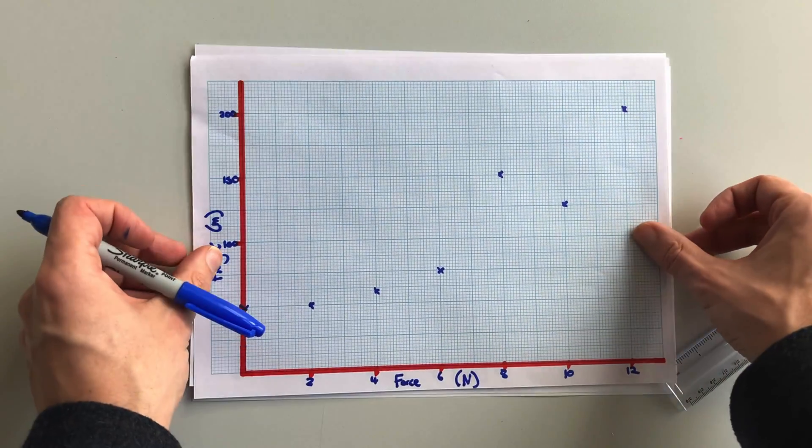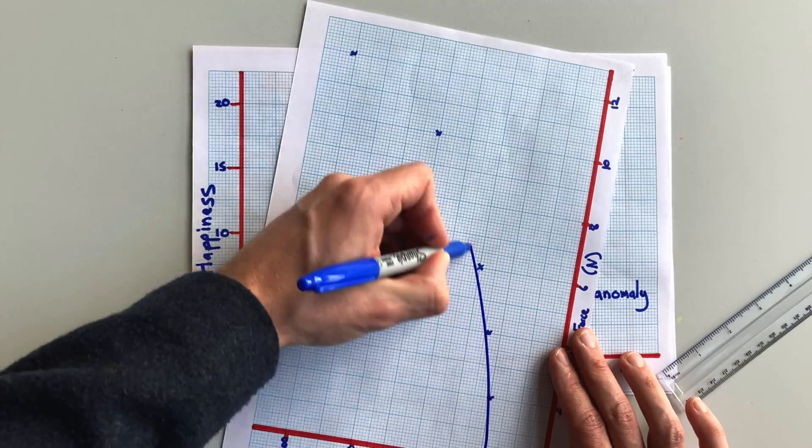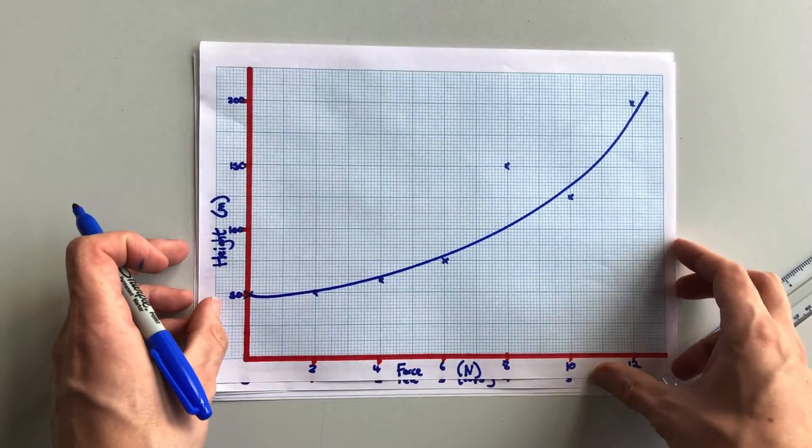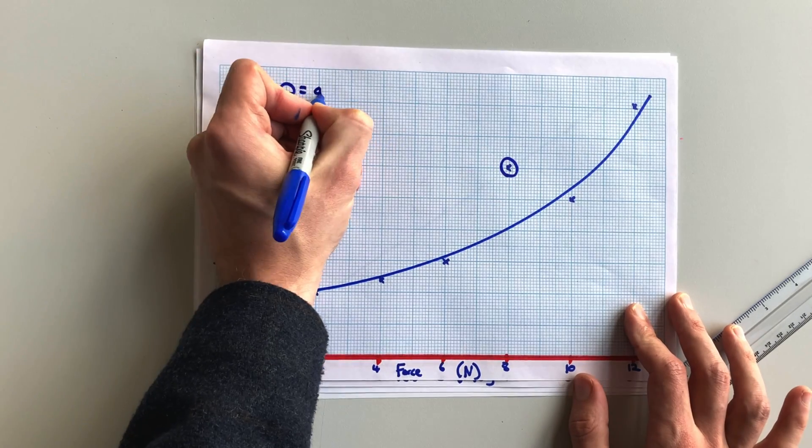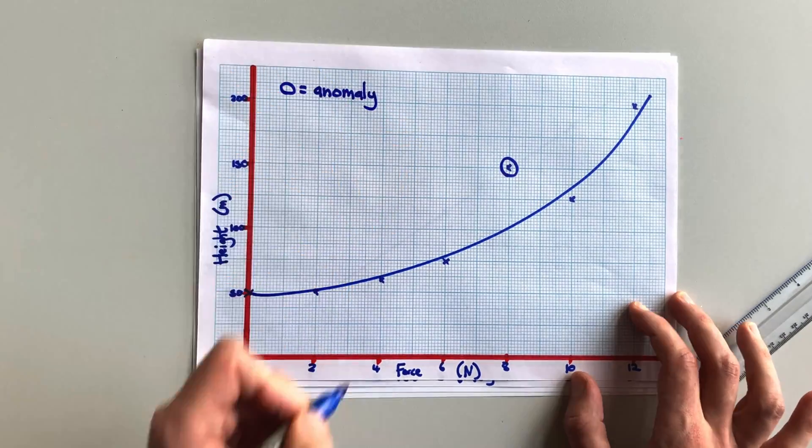For this next graph, the line of best fit is a curve, not a straight line. Most of our points are very close to the line, apart from one, and that one that's different is the anomaly.